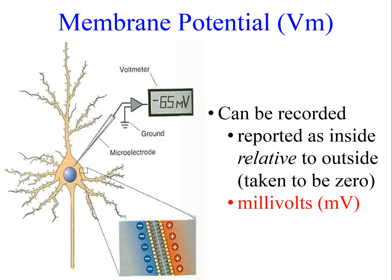The membrane potential can be recorded by inserting a recording electrode into the cell and measuring the voltage difference between the inside and outside. It is reported as the inside relative to the outside, with the outside arbitrarily assigned a value of zero. Typically the membrane potential is negative inside — in neurons it ranges from about minus 60 to minus 70 millivolts, and in muscle cells it is typically around minus 90 to minus 100 millivolts.